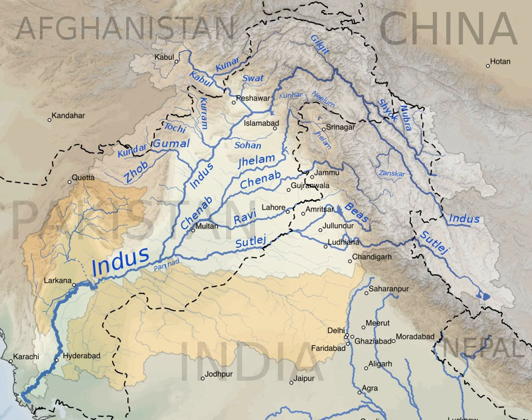According to this agreement, control over the water flowing in three eastern rivers of India — the Beas, the Ravi, and the Sutlej — with a mean flow of 33 million acre-feet (MAF), was given to India, while control over the three western rivers — the Indus, the Chenab, and the Jhelum — with a mean flow of 80 MAF, was given to Pakistan.